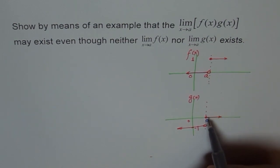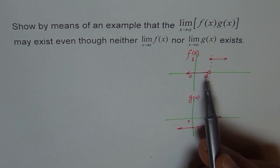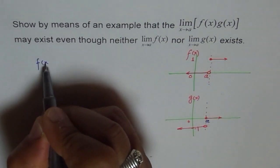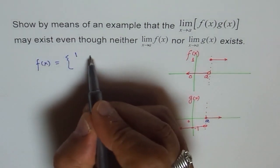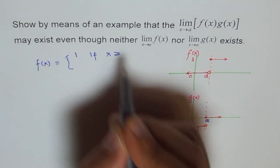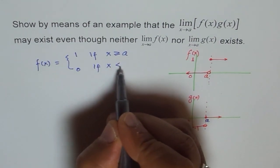So at a, when we approach from the right side, we are at zero. But when we approach from the left side, the limit of the function is minus one. Since the limits don't match from both left and right side, the limit does not exist at a. Same for f(x). So we can write f(x) as a piecewise function: f(x) equals one if x is greater than or equal to a, and equals zero if x is less than a.